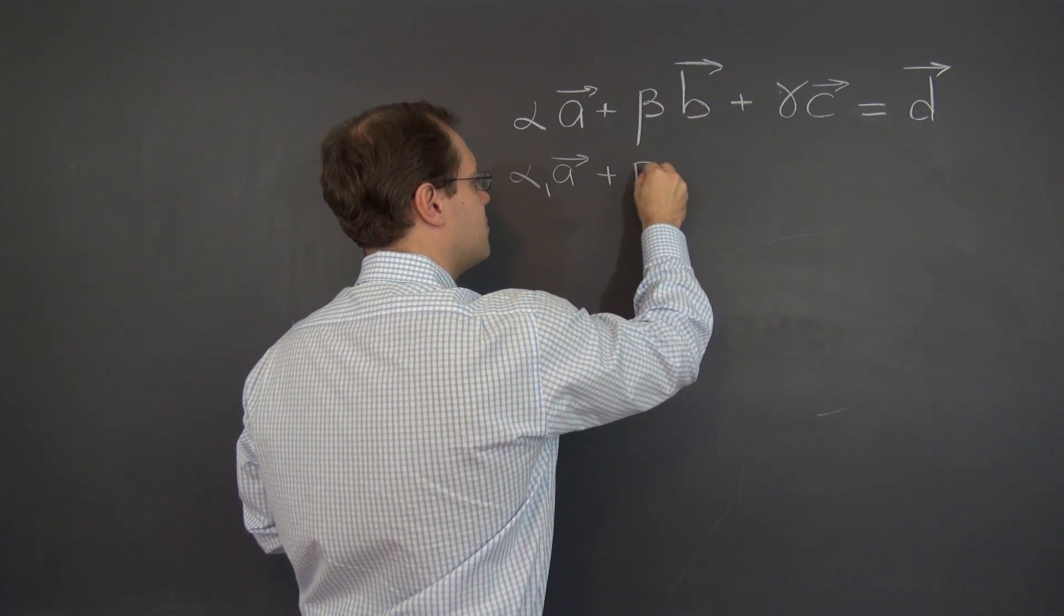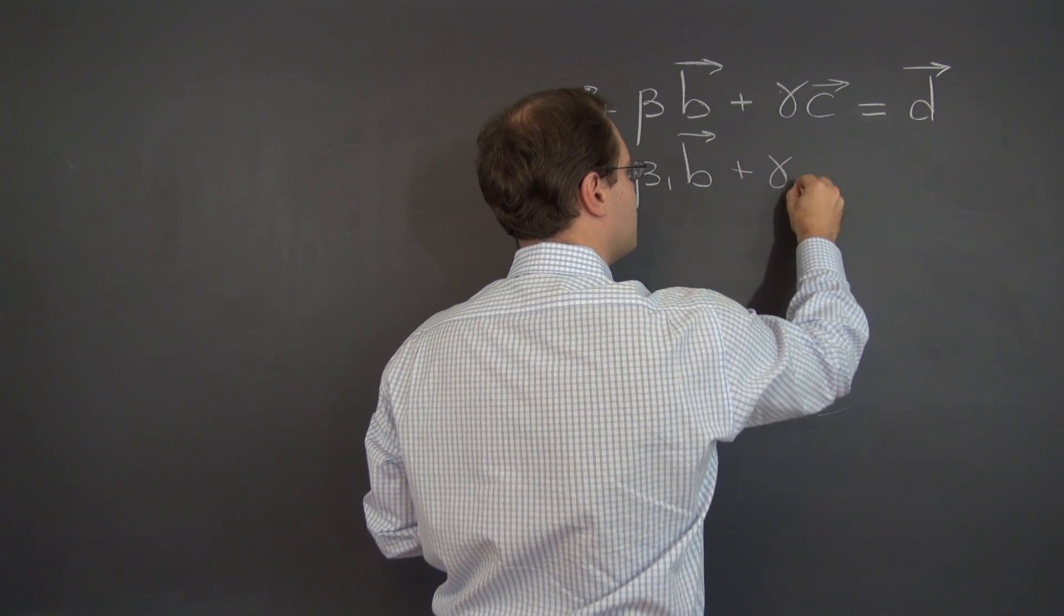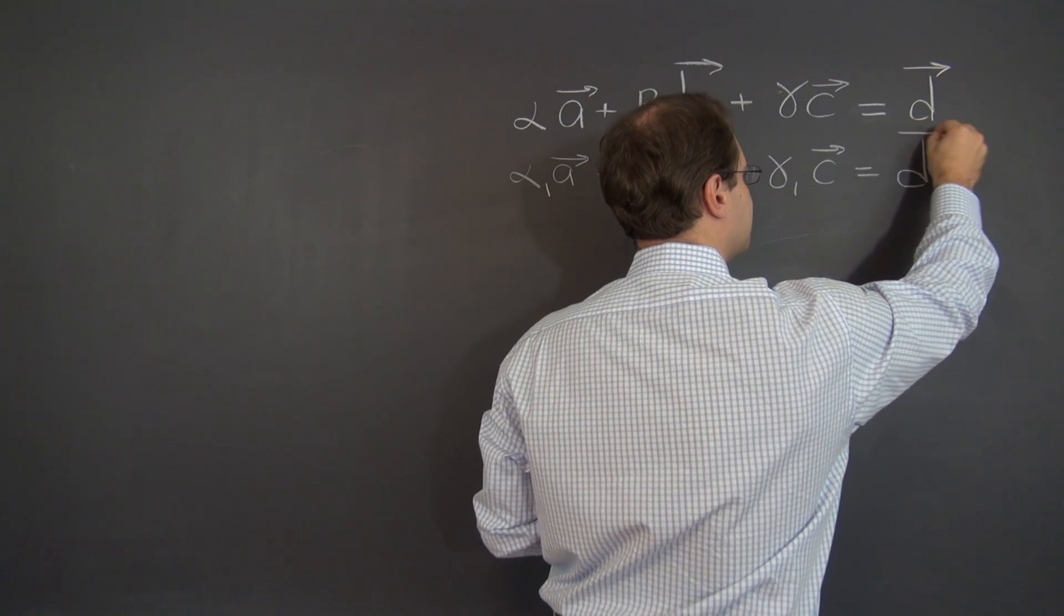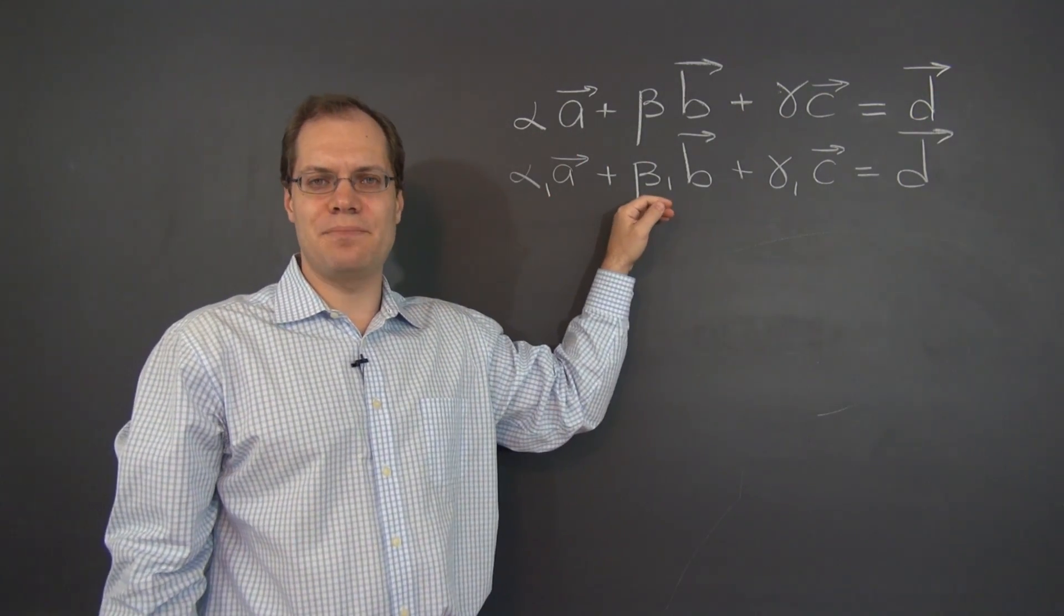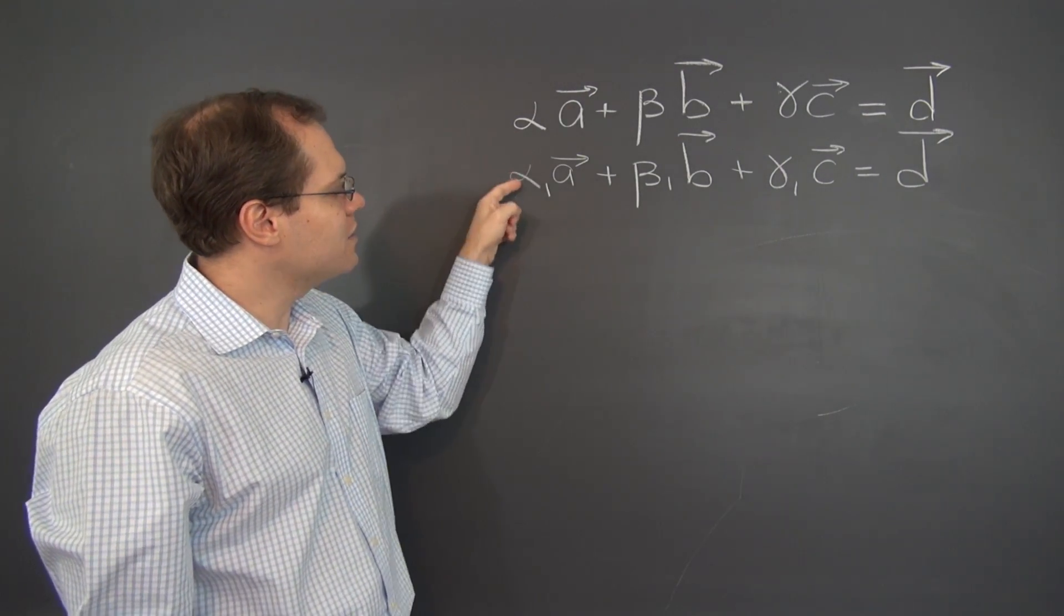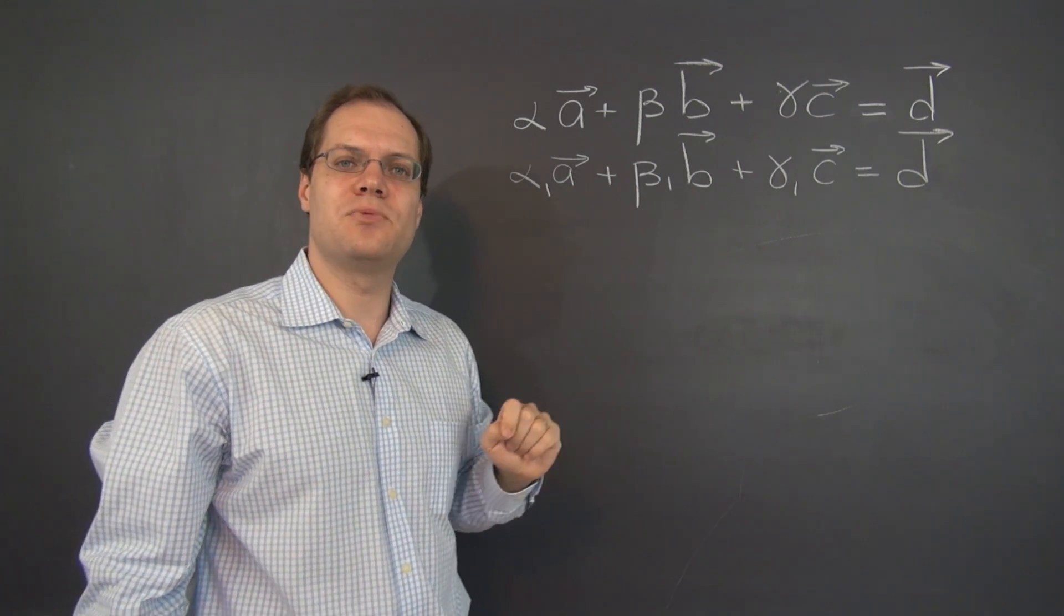So alpha one a plus beta one b plus gamma one c equals still d. So now we have two different decompositions that give the vector d, and at least one of these coefficients is different. We don't know which one, but at least one of them is.